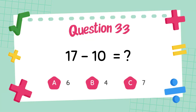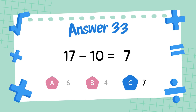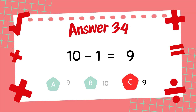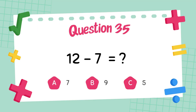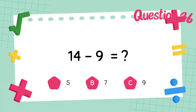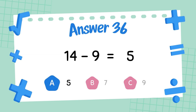What is 17 minus 10? The answer is 7. What is 10 minus 1? The answer is 9. What is 12 minus 7? The answer is 5. What is 14 minus 9? The answer is 5.